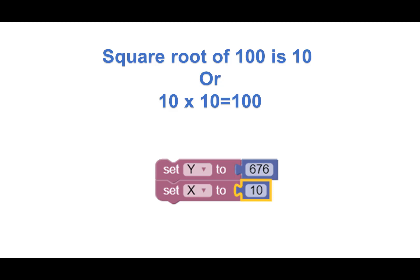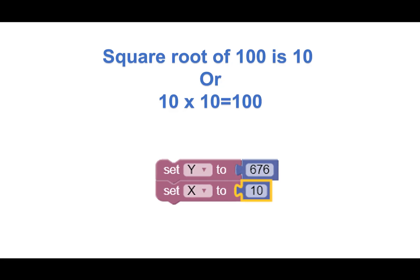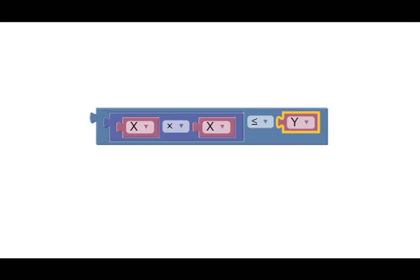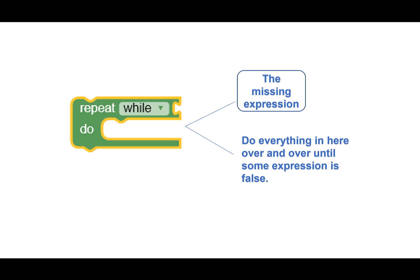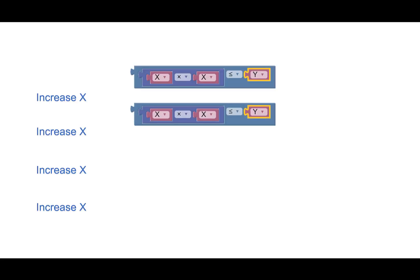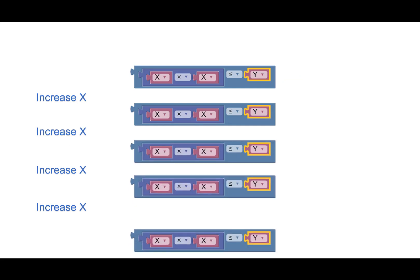Great. Let's work out the math. We need to determine the equation for a square root and make sure it is less than the value 676, represented by the variable Y. So X times X is less than Y. Yes. And then we need to repeat this continually. Okay. I get it.